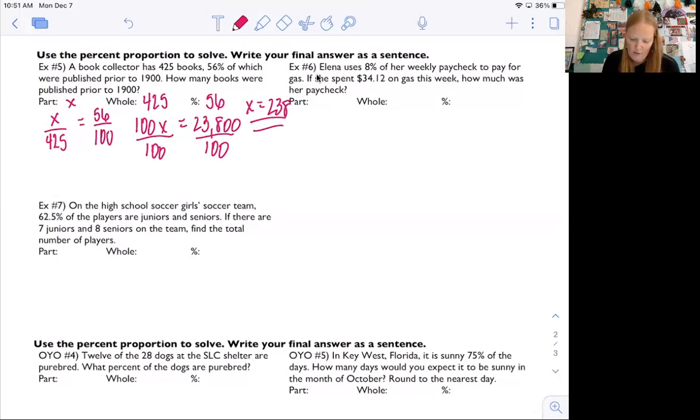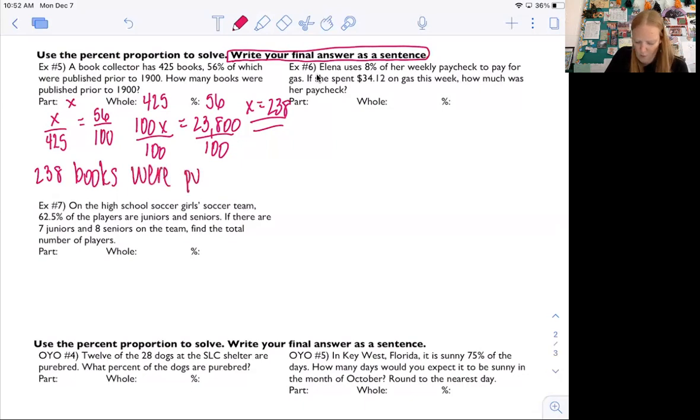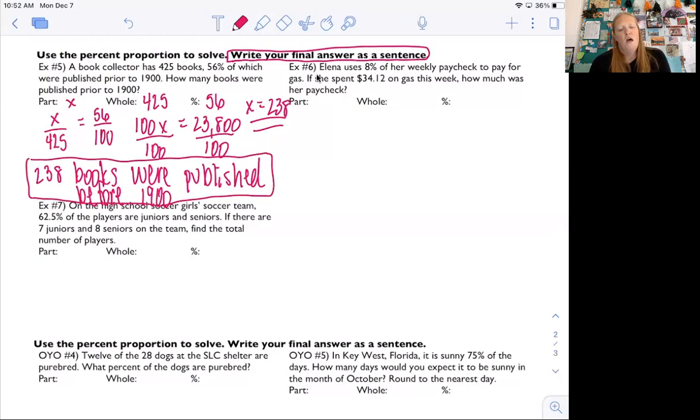Now, does it make sense that our number is smaller than 425? Yes, because you can't have more books published prior to 1900 than you have books. Now notice the directions say, write your final answer as a sentence. So I can't just write 238 because I want to know that you know what you figured out. So I would say 238 books were published before 1900. I know it takes like an extra 30 seconds to write the sentence, but sometimes they'll give you on multiple choice tests different answers. And you want to make sure you have the right one.